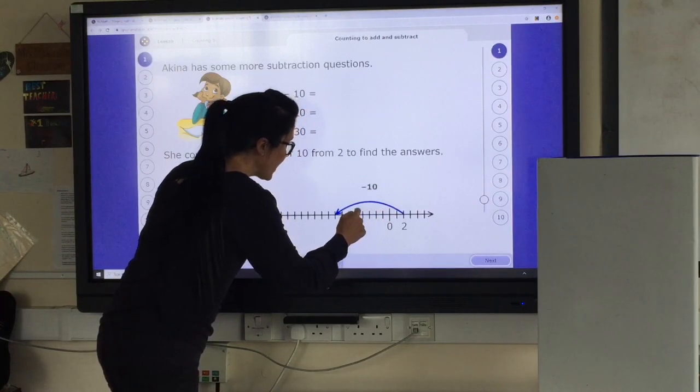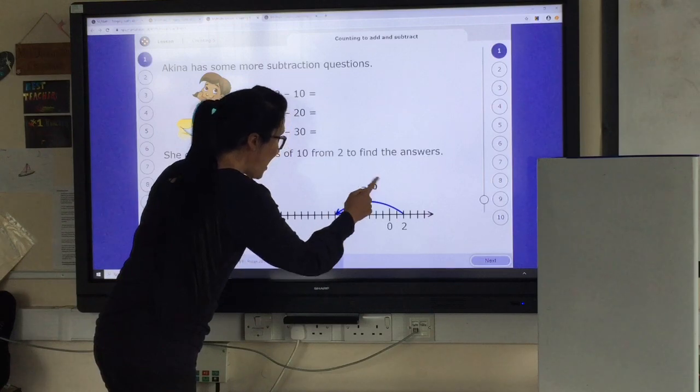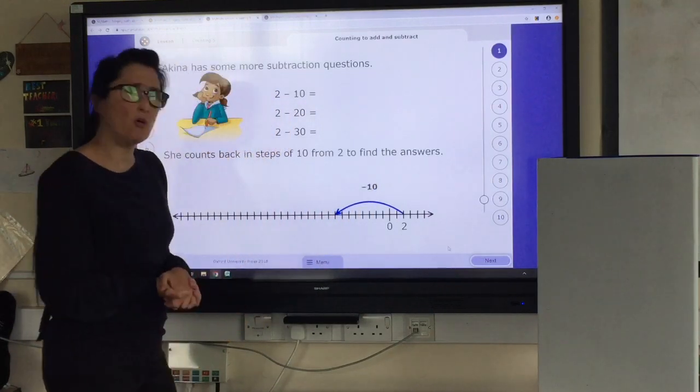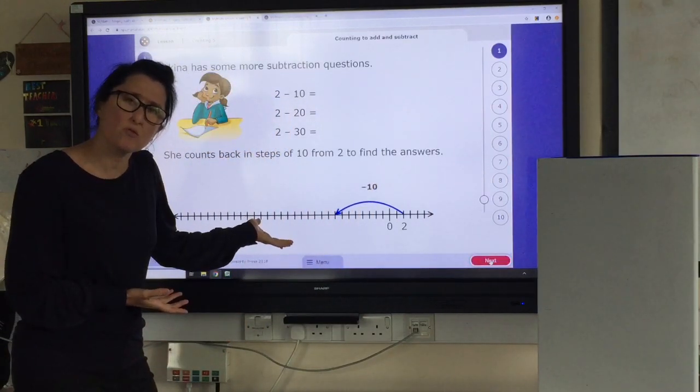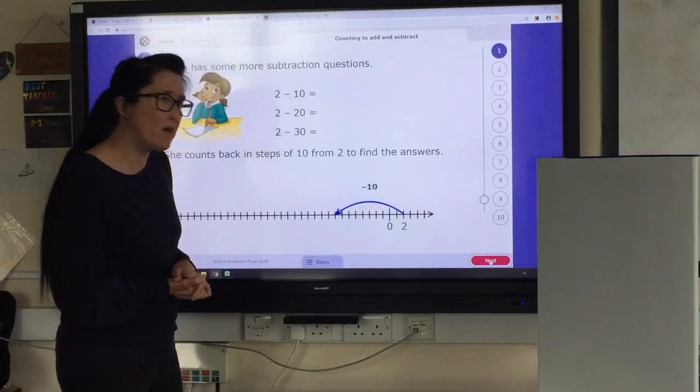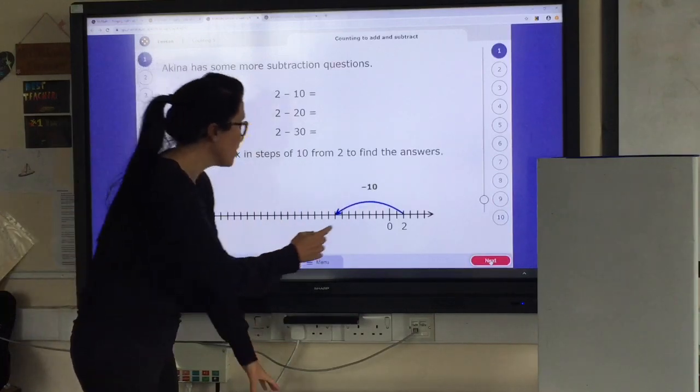I've subtracted 10. But how am I going to know what that number is because there's no numbers, there's no digits on my number line. So I'm going to have to count backwards. We know how to count backwards, don't we?